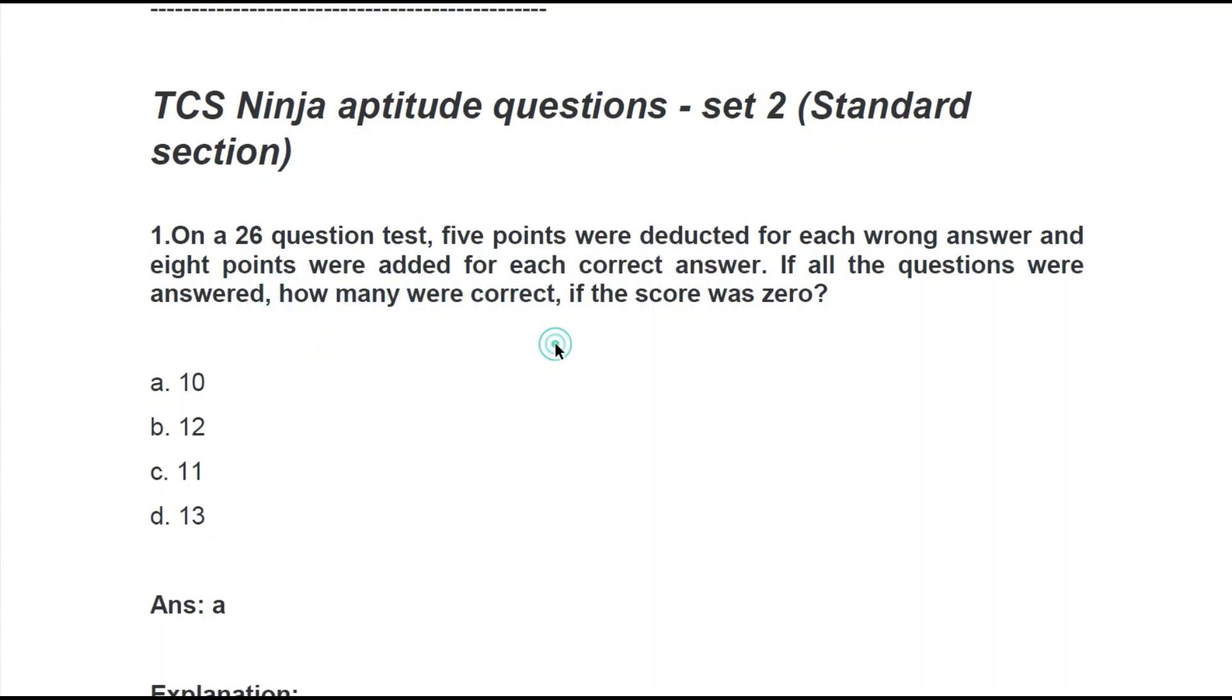So let's assume that we have answered correctly x number of questions. Then the wrongly answered ones will be 26 minus x. Why 26? Because 26 is the total number.